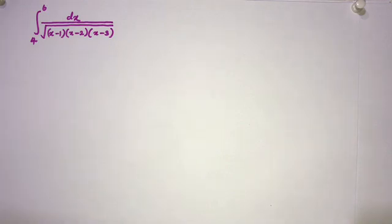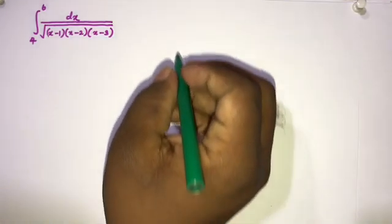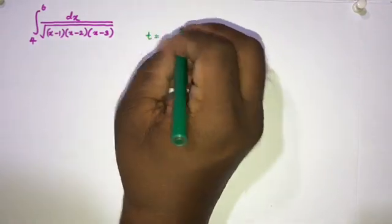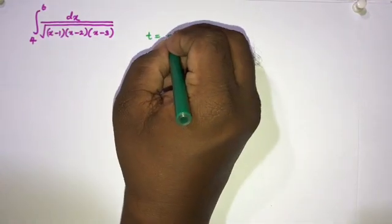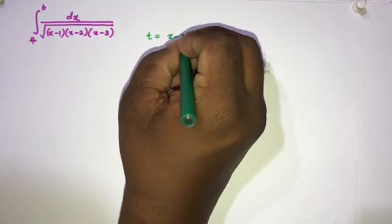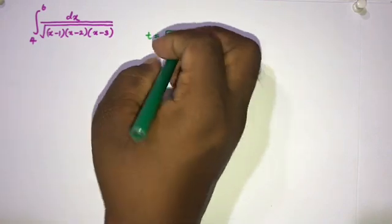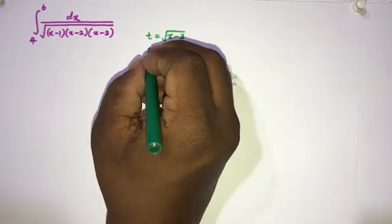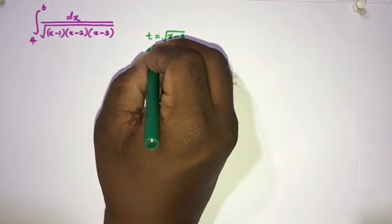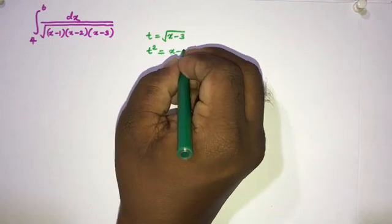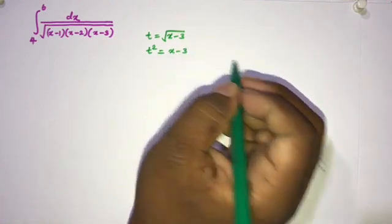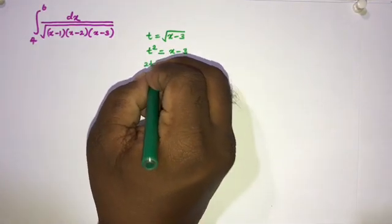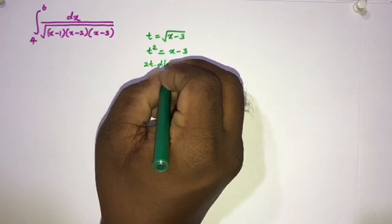To begin, I am going to take a substitution. If we take t equal to the square root of x minus 3, then squaring both sides gives t² equal to x minus 3. Differentiating, we get 2t dt equal to dx.